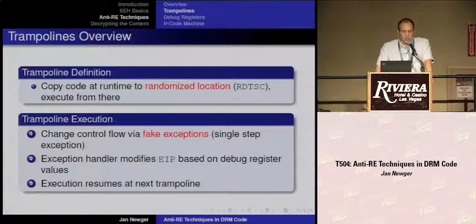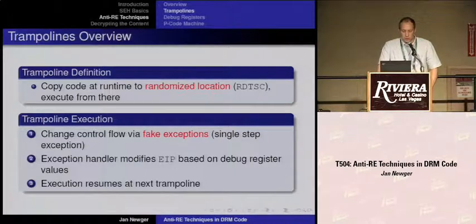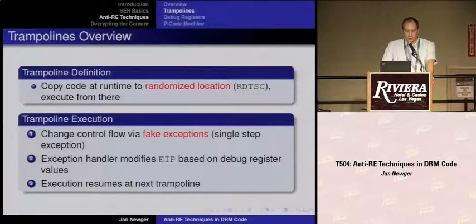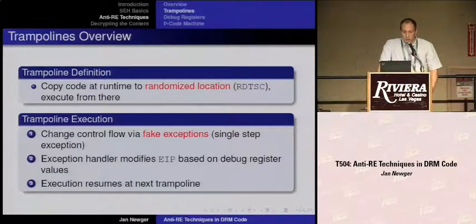Trampoline lines are code that is copied at runtime to a randomized location. RDTSC is used as a seed for a random number generator to place the destination of the trampoline line. When the trampoline line has been copied, execution is resumed from the destination. The actual control flow change is via fake exceptions — specifically a single-step exception, which also potentially interferes with an attached debugger. The exception handler modifies the instruction pointer based on some debug register values, which is exactly the reason why the debug registers have been blocked.